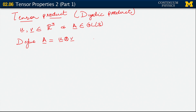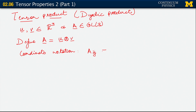To understand what this really means, we can look at it in terms of components, or in coordinate notation. In coordinate notation, the way we write that out is A_ij equals u_i v_j.